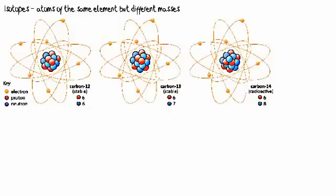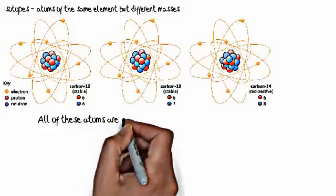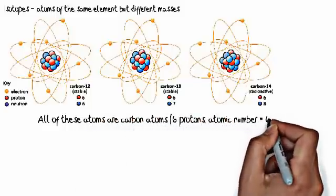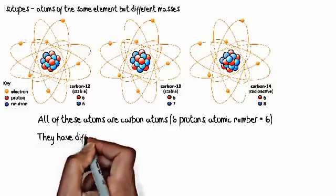Carbon has three primary isotopes, as you can see here: carbon-12, carbon-13, and carbon-14. All of these atoms are carbon atoms. They all contain six protons, which means they all have an atomic number of six, but they have different masses.